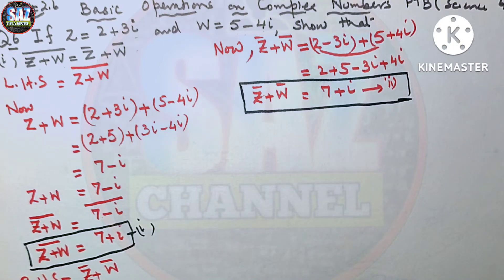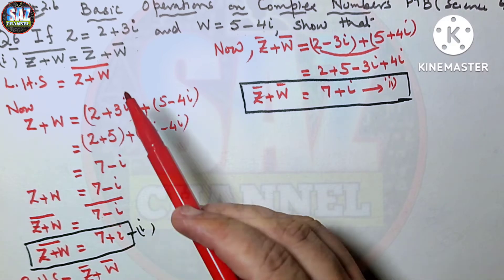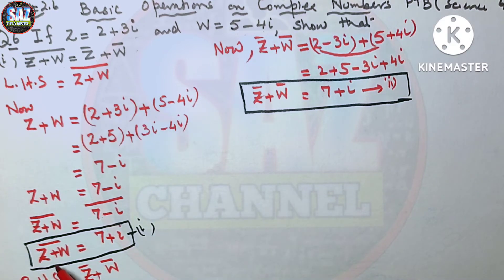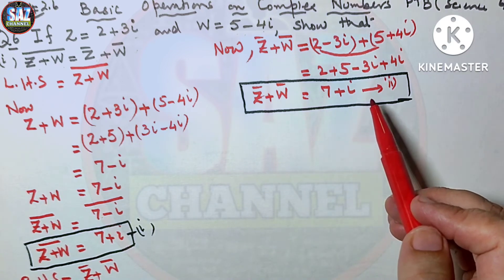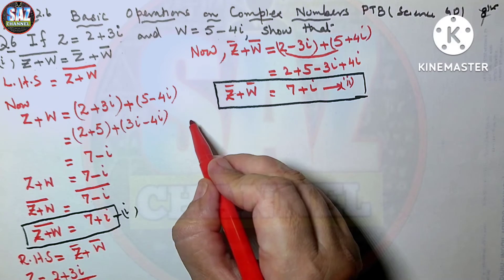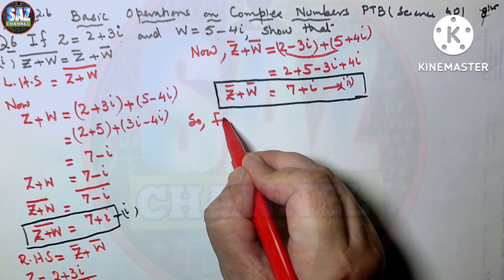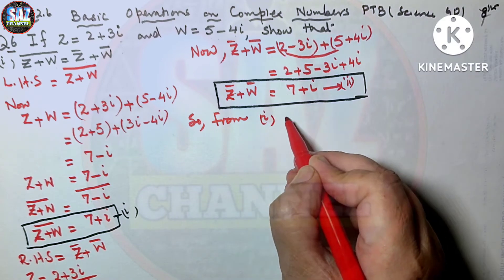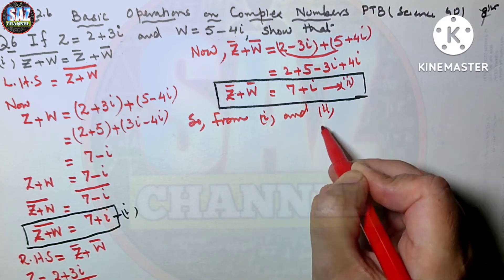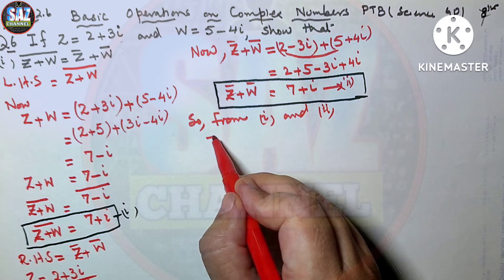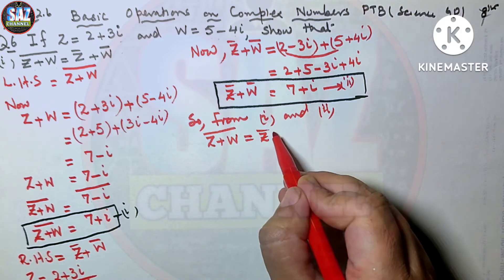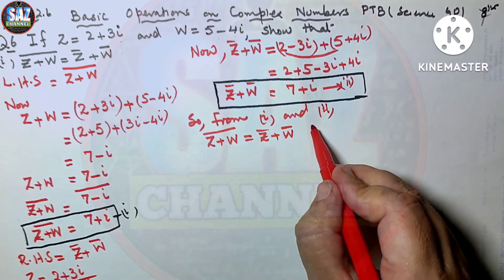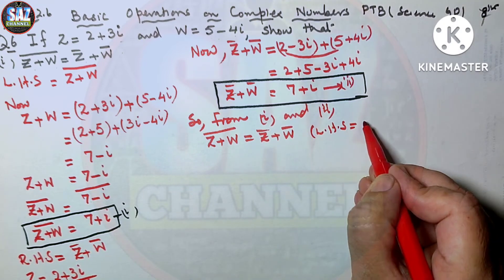We need to prove that Z plus W whole bar equals Z bar plus W bar. From answer 1, Z plus W whole bar gives 7 plus iota, and from answer 2, Z bar plus W bar also gives 7 plus iota. Therefore, from 1 and 2, Z plus W whole bar equals Z bar plus W bar, which means left hand side equals right hand side. Proved.